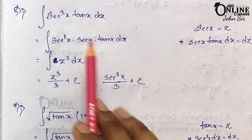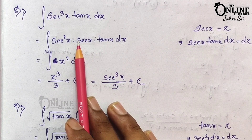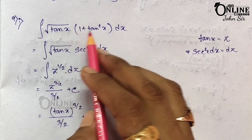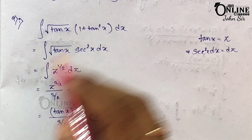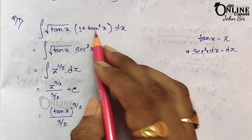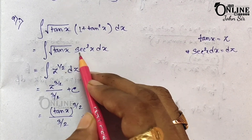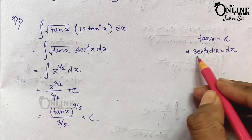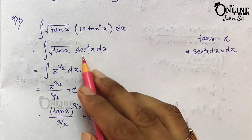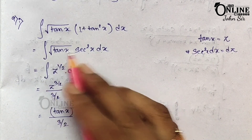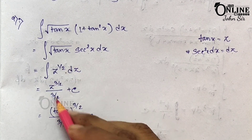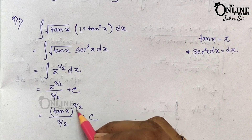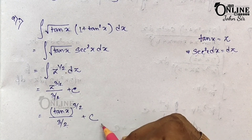Problem 8.2 is similar to 8.1 — I hope you can solve it. Problem 9.1: ∫√tan x · (1 + tan²x) dx. Using the identity 1 + tan²x = sec²x, let tan x = z, then sec²x dx = dz. The integral becomes ∫z^(1/2) dz = z^(3/2)/(3/2) + C = (tan x)^(3/2) / (3/2) + C.